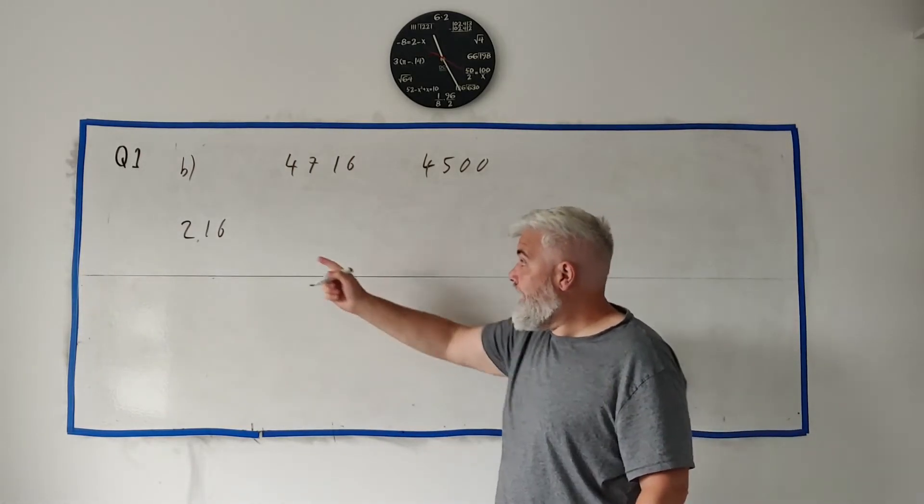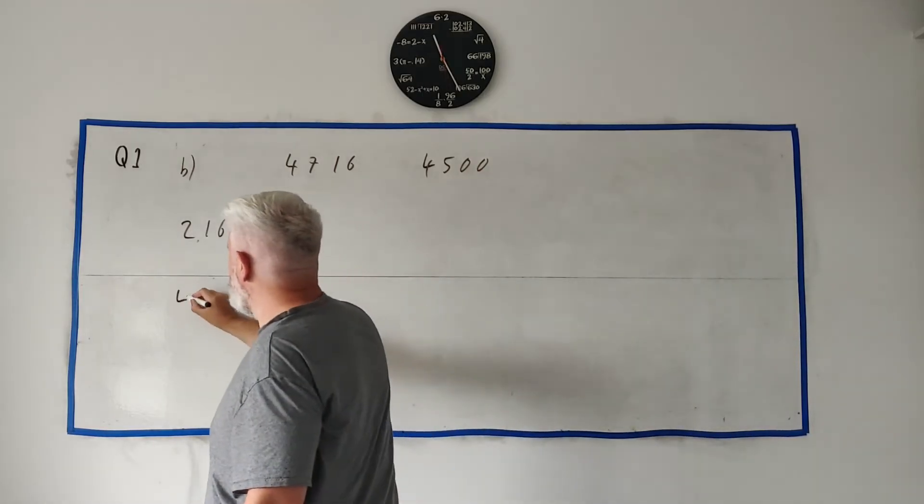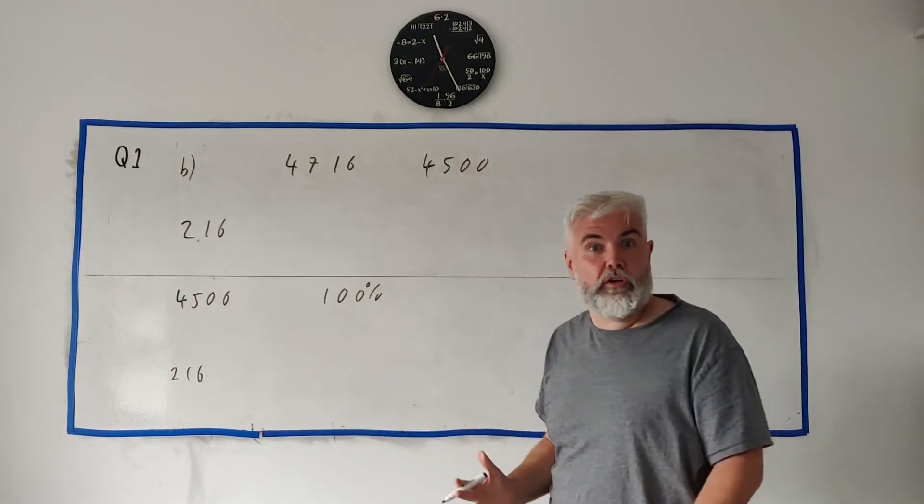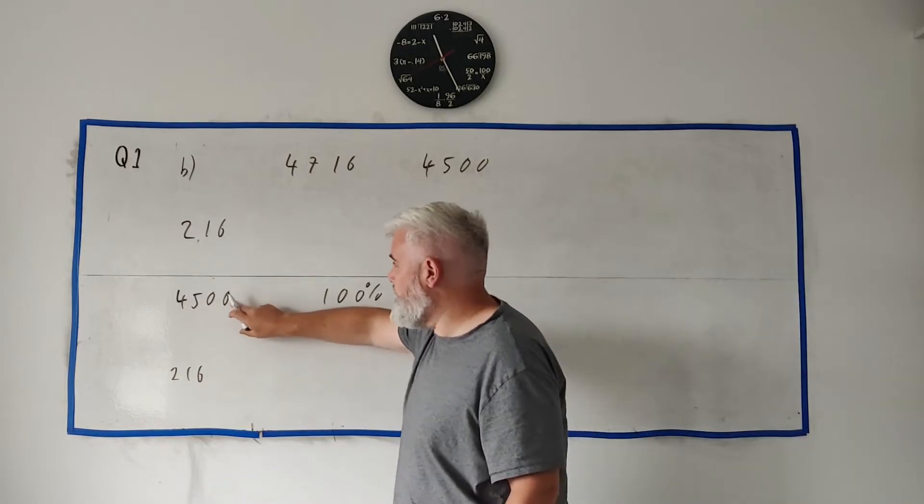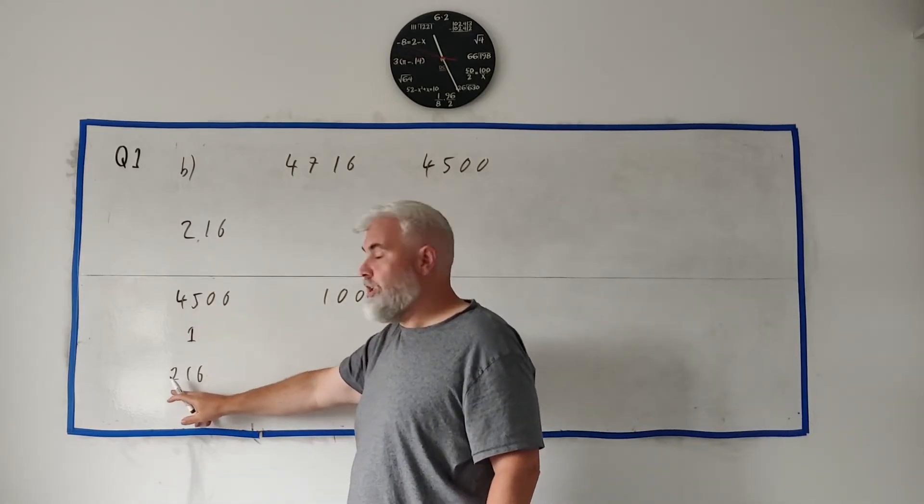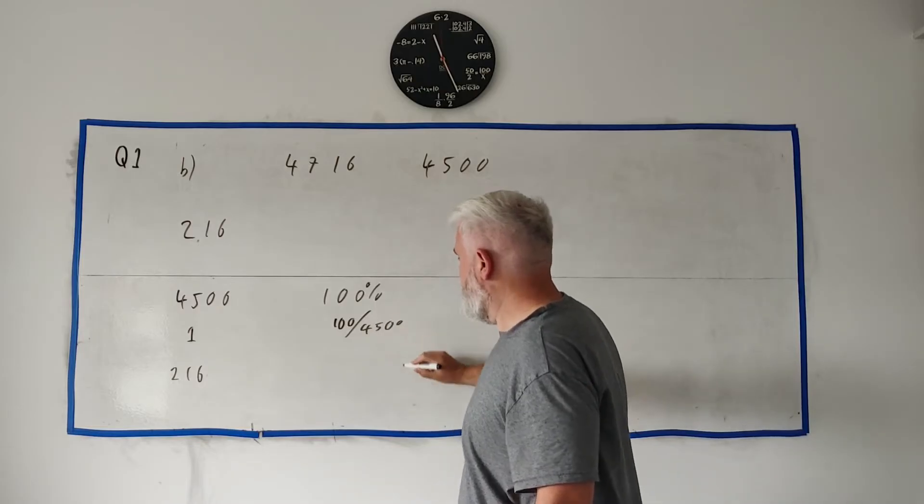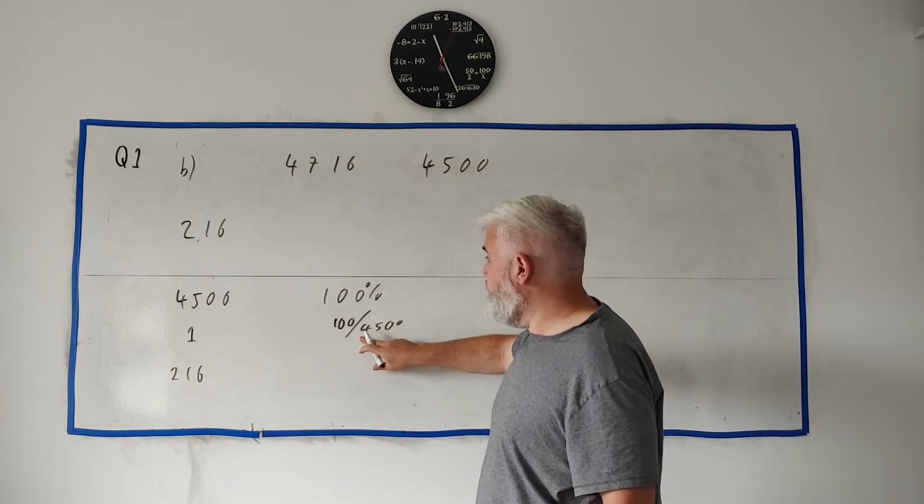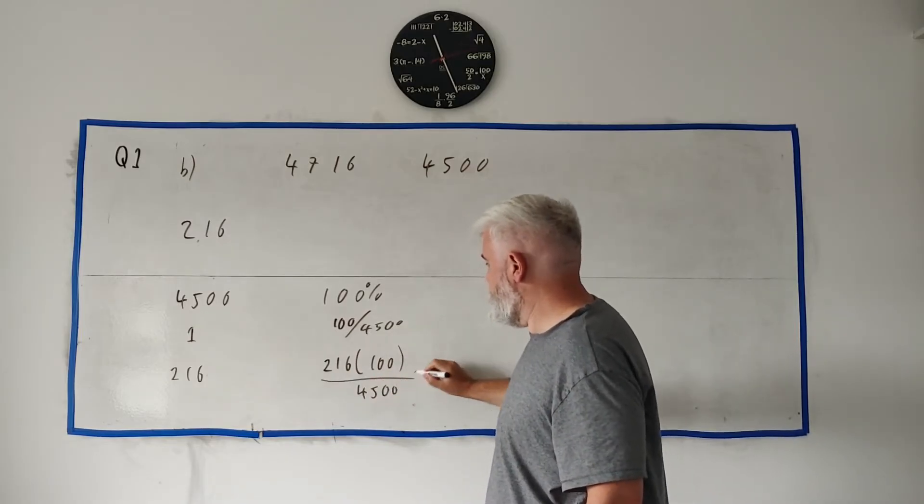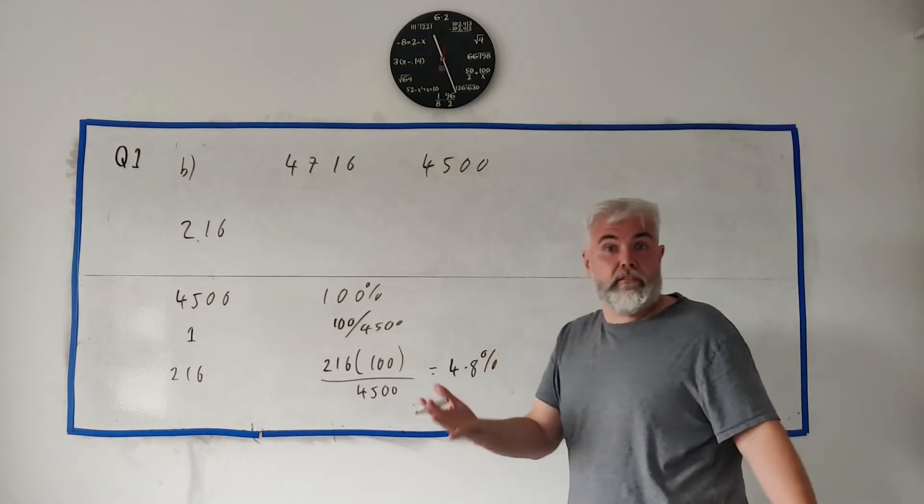I'll show you at the end a slightly quicker way. So this is how much tax there was on this number, so this is the real price of it. Here's how I would show this: I would say 4,500 is 100 percent, 216 is some percent that we're looking for, that would be the answer we're looking for, the percentage down here. How do I get from here to here? Always go through 1. Divide by 4,500 you'll get to 1, multiply by 216 you'll get here. Just do the same to both sides, divide this side by 4,500, then multiply by 216. So 216 times 100 divided by 4,500 all that into a calculator should give you 4.8% which is full marks for Part B.